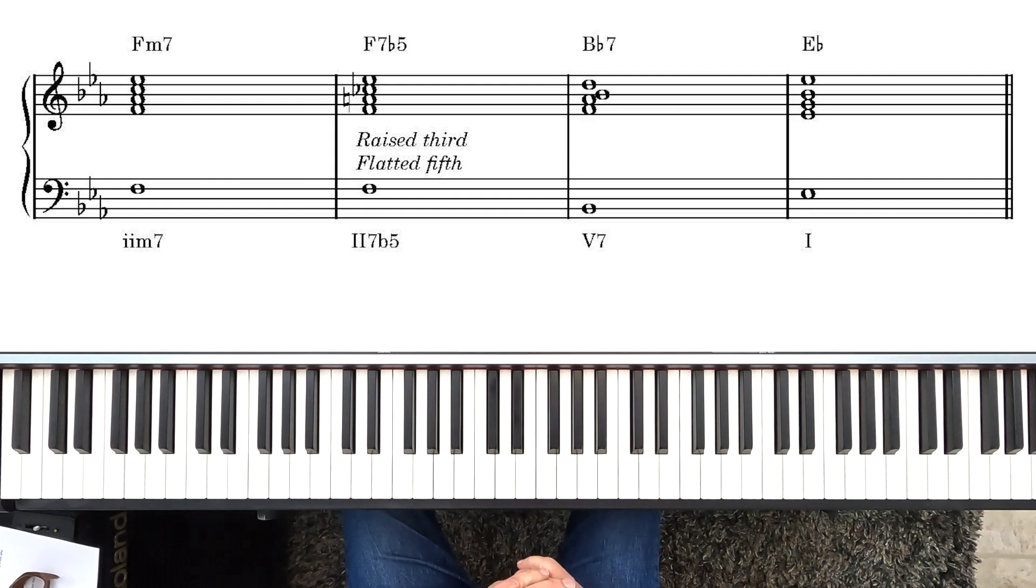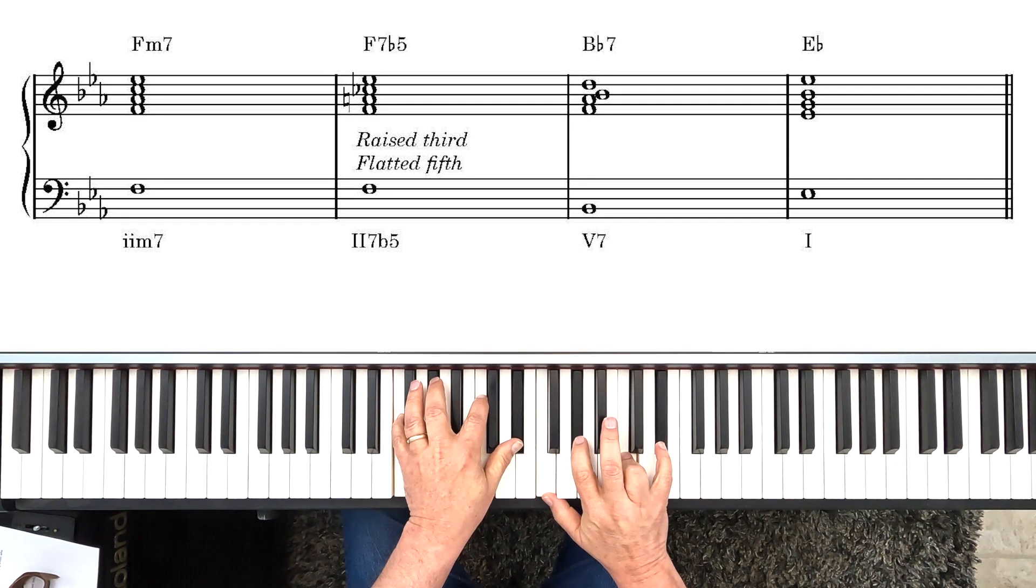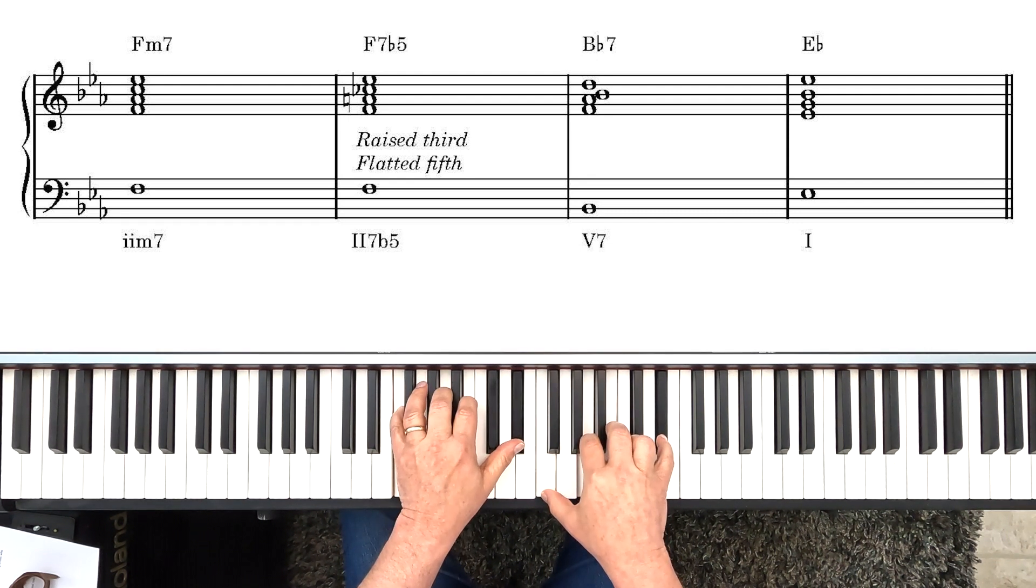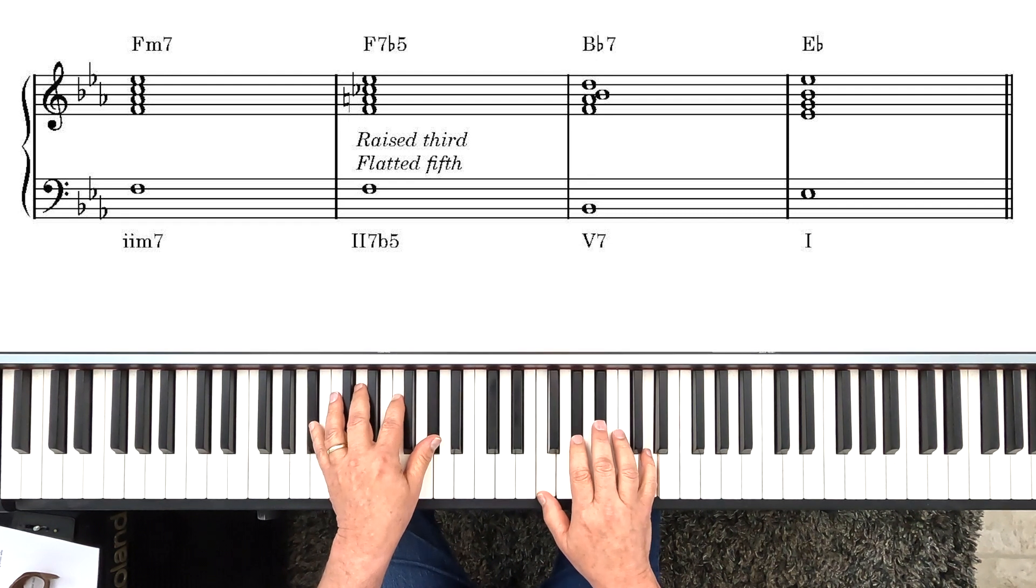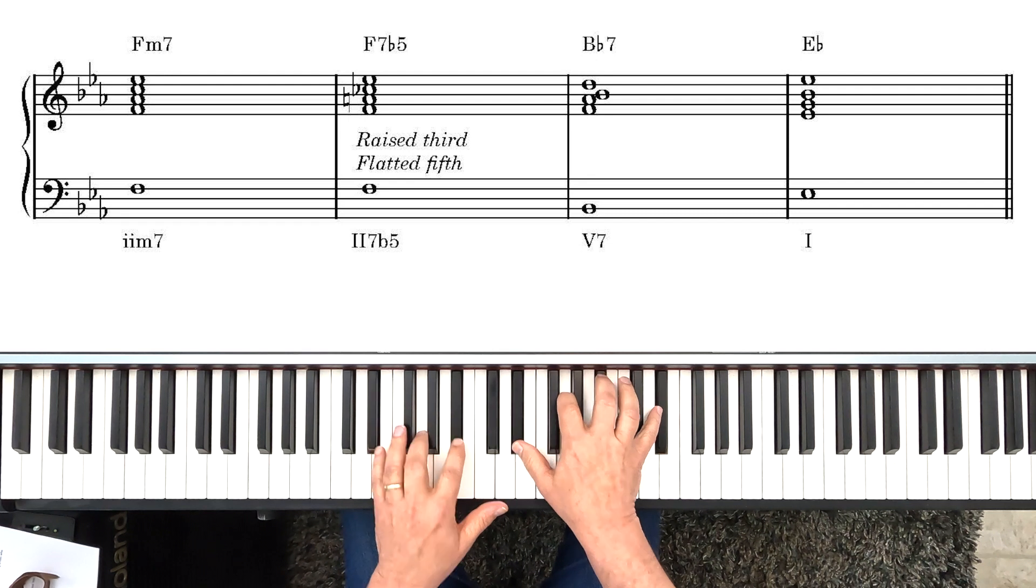We can do the same thing in E flat major. There's our II7 chord, which is F minor 7. We raise the 3rd and flat the 5th. We end up with this chord, which leads us to B flat or B flat 7, and then back to E flat. In the key of G...